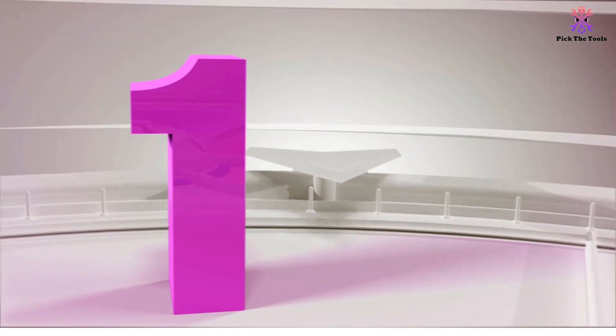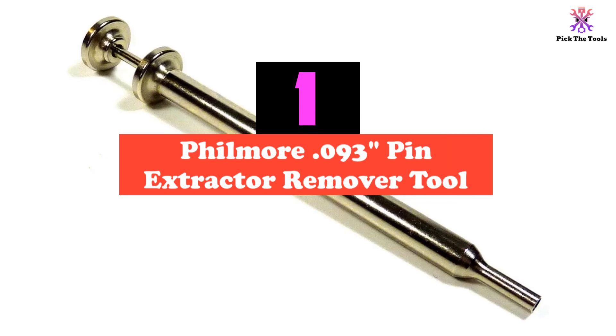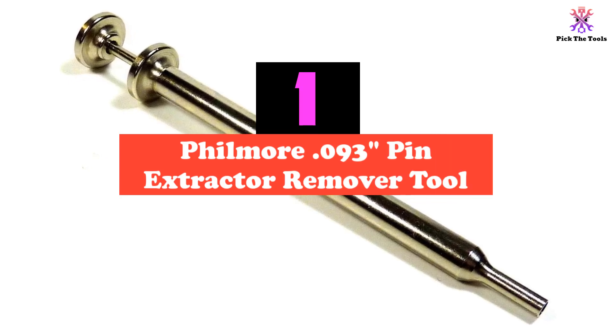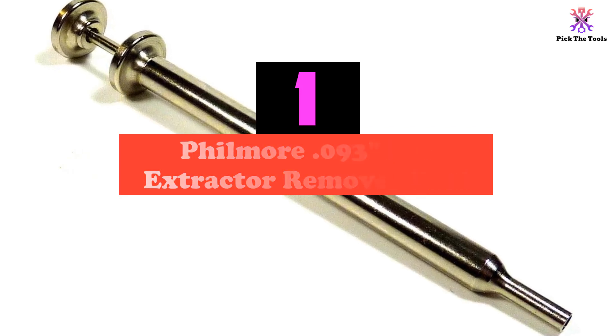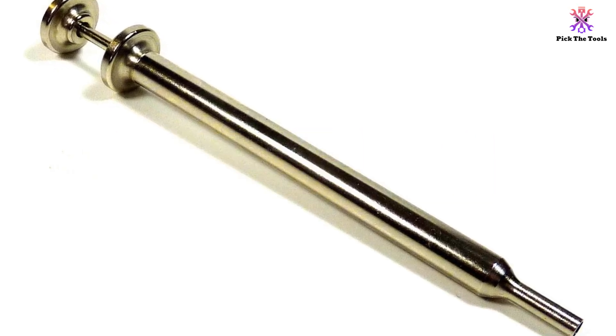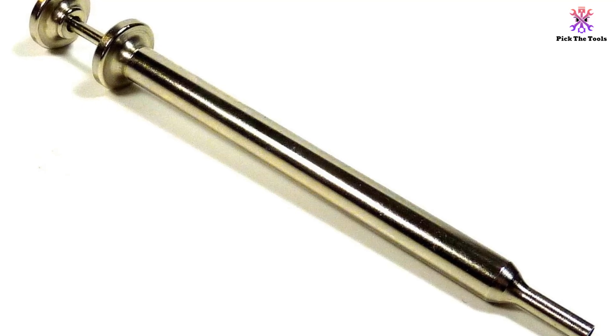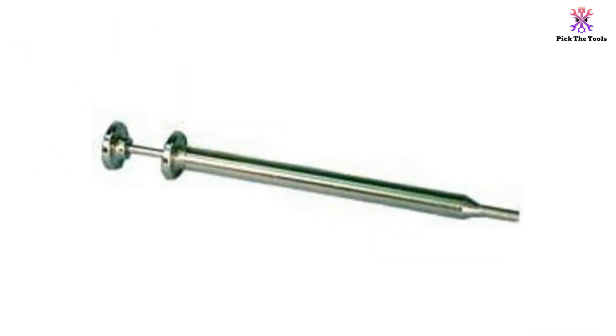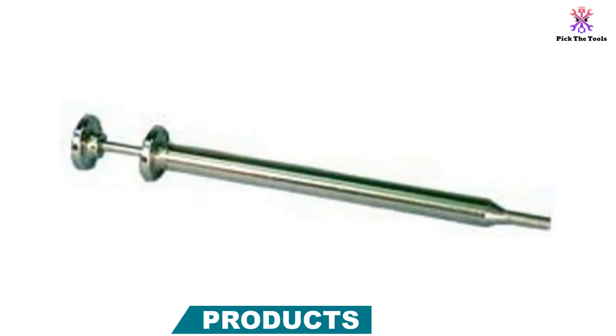And finally at number 1, we have the Fillmore .093 Pin Extractor Remover Tool. Introducing the Fillmore Pin Extractor, a versatile and reliable tool designed for effortless removal of 0.93 diameter male and female locking crimp pins without causing any damage. With its all-metal construction and sleek chrome silver color, this tool is not only durable but also visually appealing.